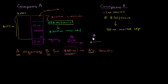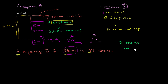In exchange, Company B's shareholders are going to give all of their 1 million shares in Company B in exchange for those 2 million shares of Company A. So each of the shareholders of Company B are going to get 2 shares of Company A for every 1 share of Company B they own.